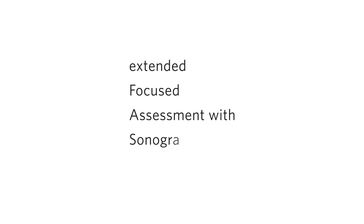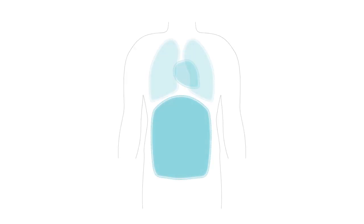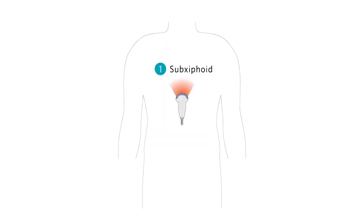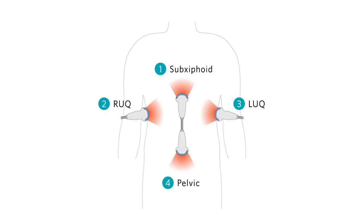The Extended Focused Assessment with Sonography and Trauma Exam, or EFAST for short, is a rapid assessment for life-threatening traumatic conditions by looking for fluid in the pericardial, peritoneal, and pleural spaces. We're going to start with a subxiphoid view of the heart, followed by a right upper quadrant scan, left upper quadrant scan, and finally the pelvic scan.